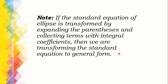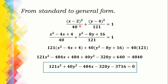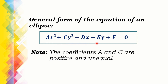If the standard equation of the ellipse is expanded by expanding the parentheses and collecting terms with integral coefficients, we are transforming the standard equation to general form. For example, the standard form (x − 2)² over 40 plus (y − 4)² over 121 equals 1 is multiplied through by the LCD of 40 and 121. This gives 121x² plus 40y² minus 484x minus 320y minus 3716 equals 0. This is the general form, expressed as Ax² + Cy² + Dx + Ey + F = 0, where the coefficients of x² and y² are positive and unequal.